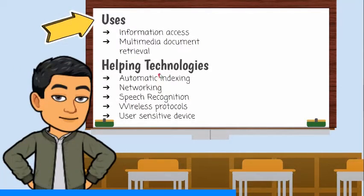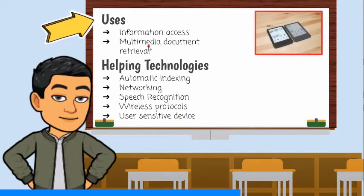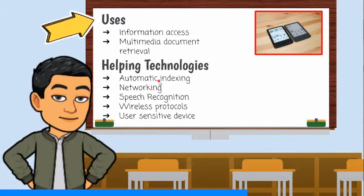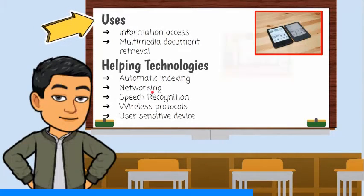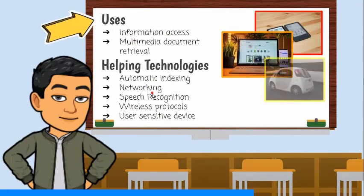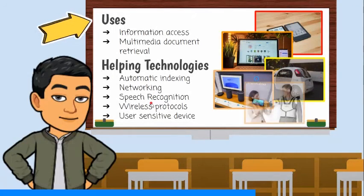Here are some uses of ubiquitous computing: information access, text, or multimedia document retrieval, like when we are using an electronic book. Those uses can be performed through the help of the following hardware and software technologies, like automatic indexing. Automated indexing is the process of assigning and arranging index terms without human intervention. The index is produced using algorithms, rule sets, or machine learning. Next is networking, speech recognition, wireless protocols, and user-sensitive devices.